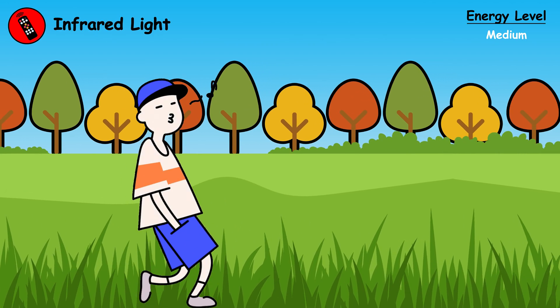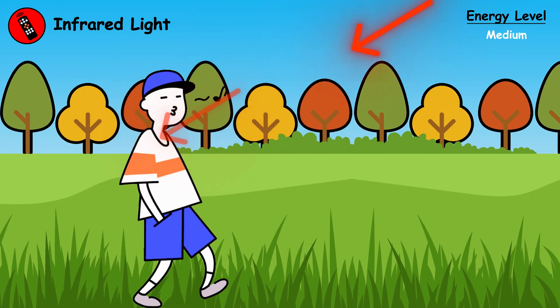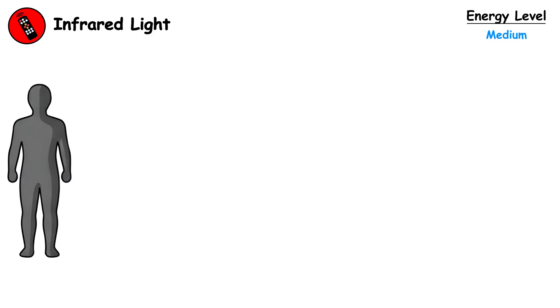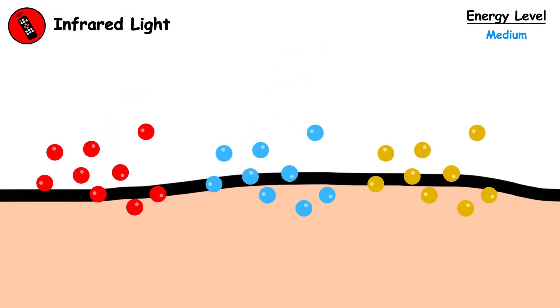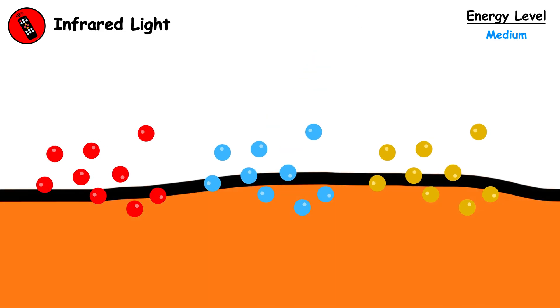When you step outside and feel the sun warming your skin, infrared rays are the main reason. Your skin contains specialized nerve endings that detect infrared as heat. When these rays strike your skin, they cause molecules to vibrate faster, increasing temperature.